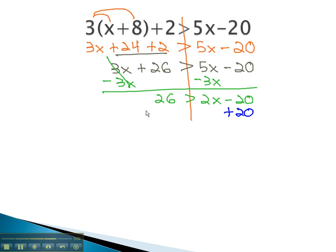By adding 20, we can begin isolating the variable on the right side. 46 is greater than 2x. Finally, dividing by 2 will tell us that x is less than the 23, or 23 is greater than the x.